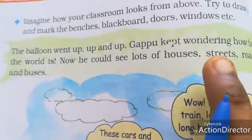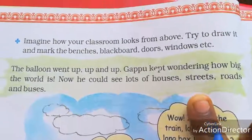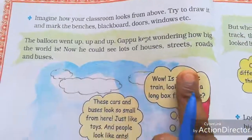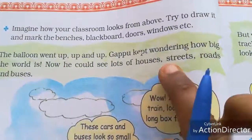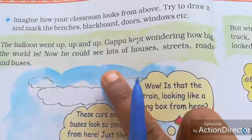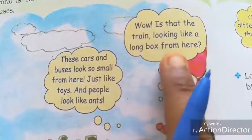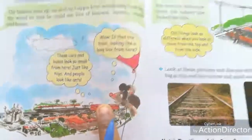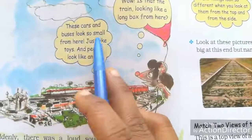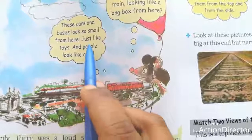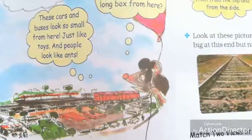The balloon went up, up, up. Gappu kept wondering how big the world is. Now he could see lots of houses, streets, roads, and buses. 'Is that a train looking like a long bus from here?' These cars and buses look so small — just like toys. And people look like ants.